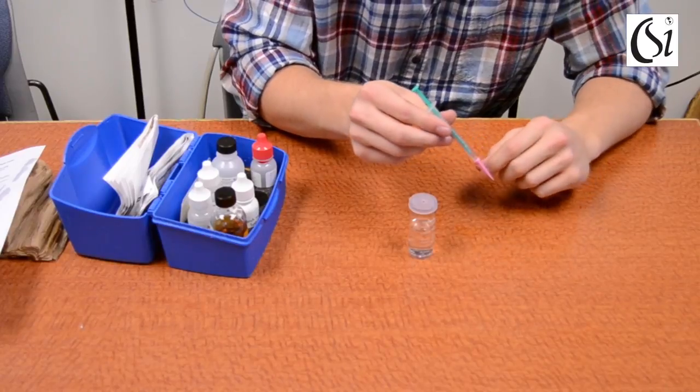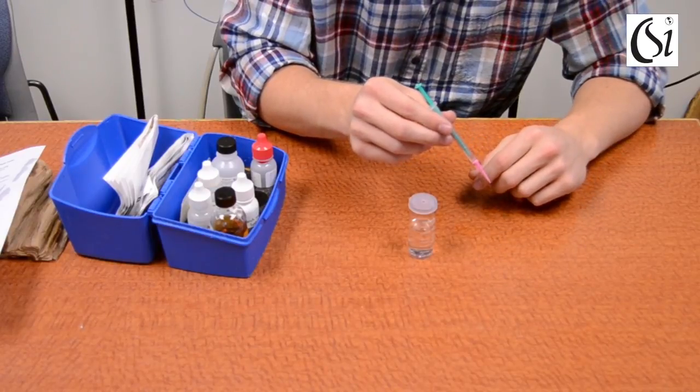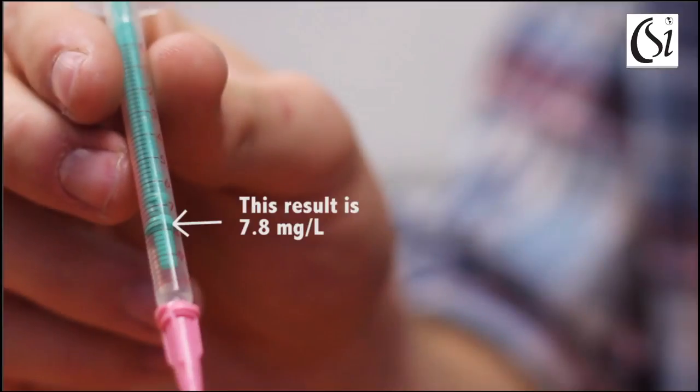Read your result where the green line touches the outside of the plunger. Record your result on the field data sheet in the dissolved oxygen section.